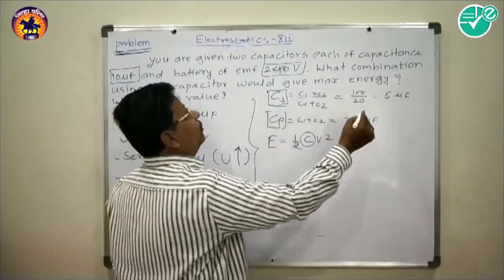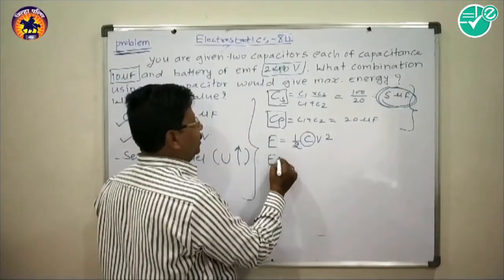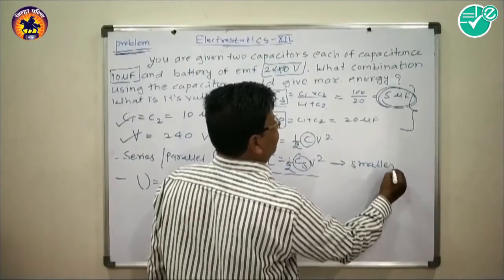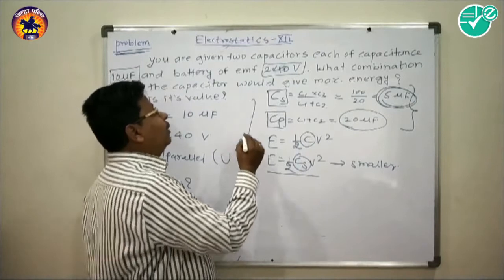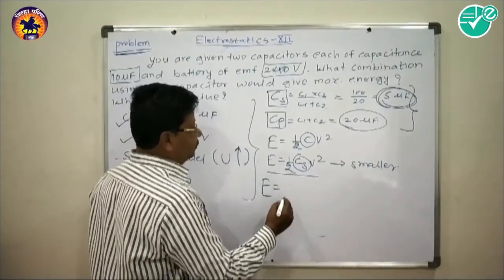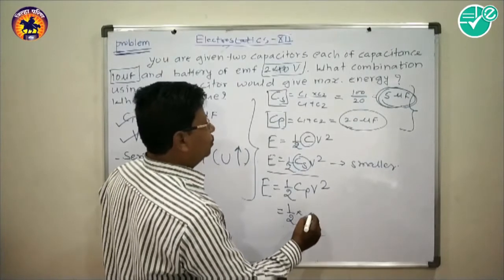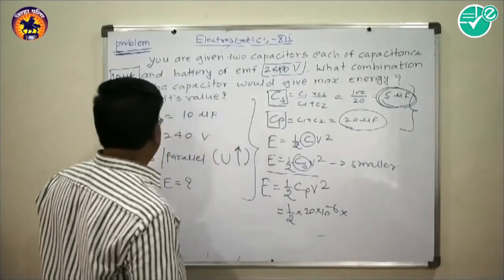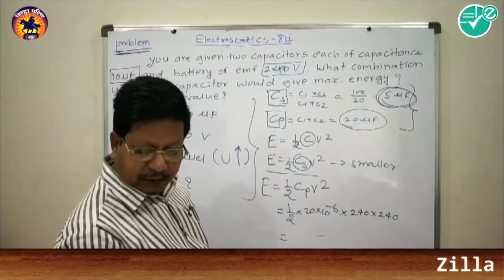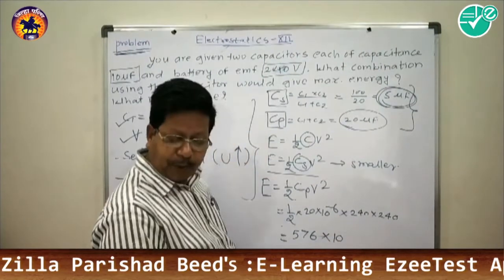Since E = ½CV², a larger equivalent capacitance gives more energy. The parallel combination has Cp = 20 microfarad, which is greater than Cs = 5 microfarad, so the parallel combination stores more energy. The maximum energy is E = ½ × 20×10⁻⁶ × (240)² = ½ × 20×10⁻⁶ × 57600 = 576×10⁻³ joules.